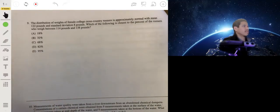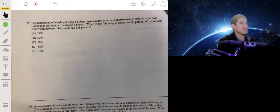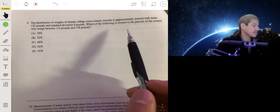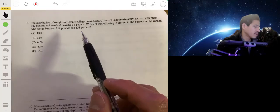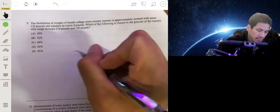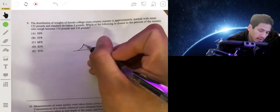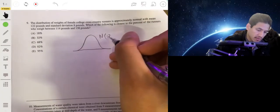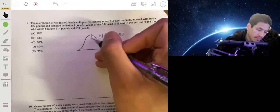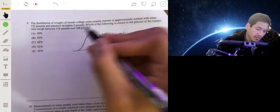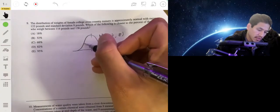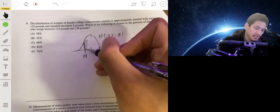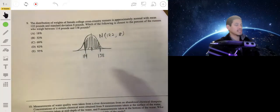The distribution of weights of female college cross-country runners is approximately normal with mean of 122 and standard deviation of 8 pounds. Which of the following is the closest percent of the runners who weigh between 114 and 138 pounds? We're essentially just going to look at the area found in the normal distribution with the mean of 122, standard deviation of 8. So 114 and 138, 114 to the left, 138 to the right. You want to find essentially this area. That's the probability.